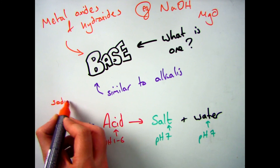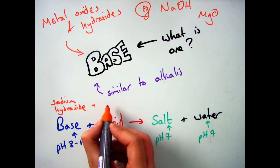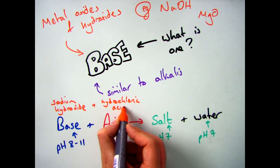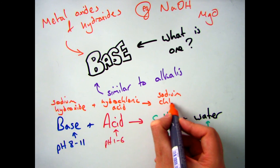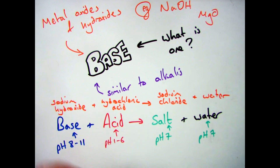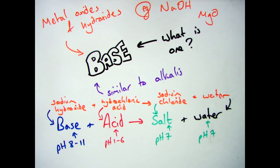If we were to look at the word equation, for example sodium hydroxide reacting with hydrochloric acid will give you sodium chloride and water. In that reaction, sodium hydroxide is your base, hydrochloric acid is your acid, sodium chloride is your salt, and water is obviously your water.